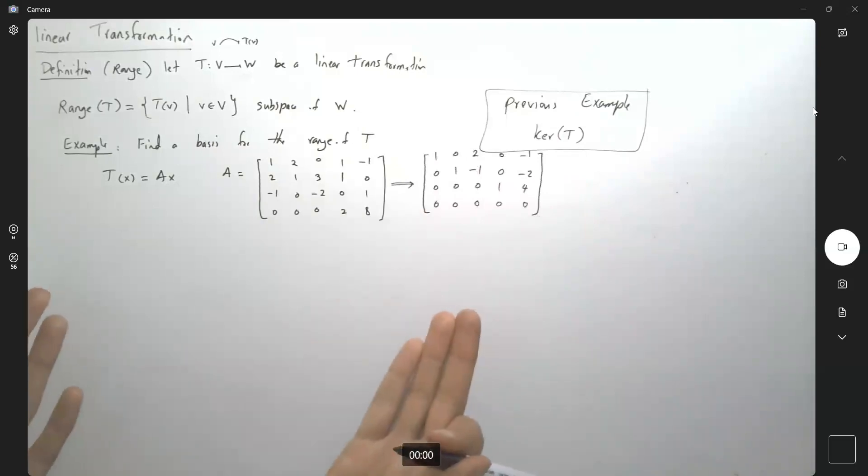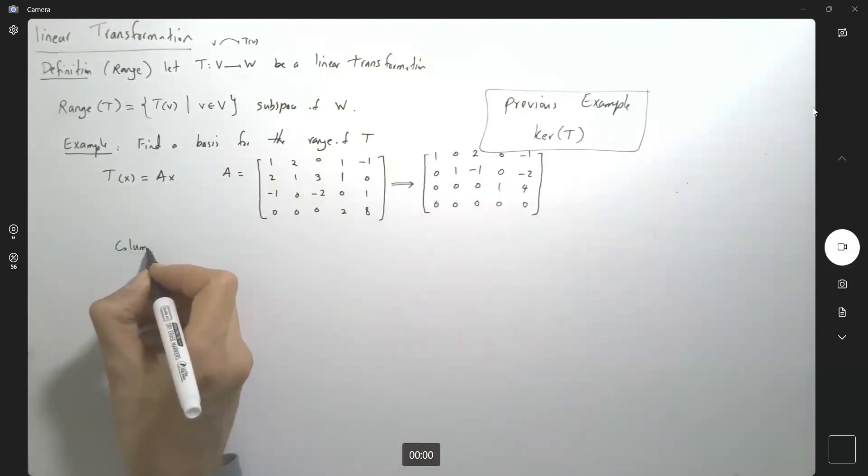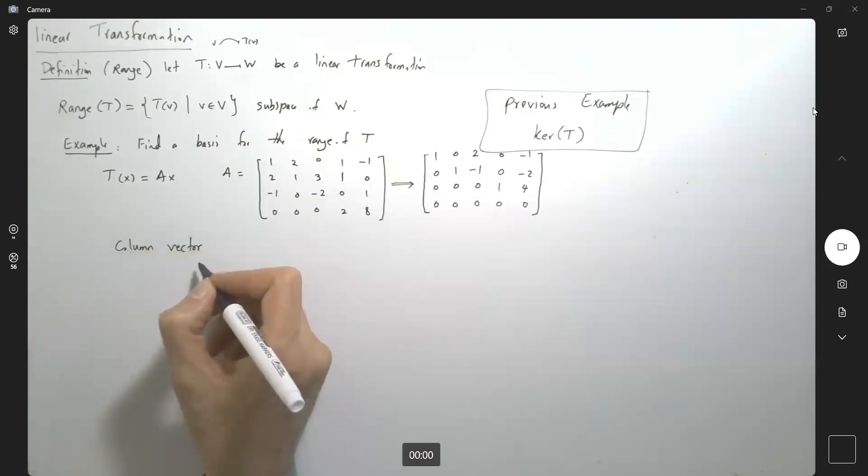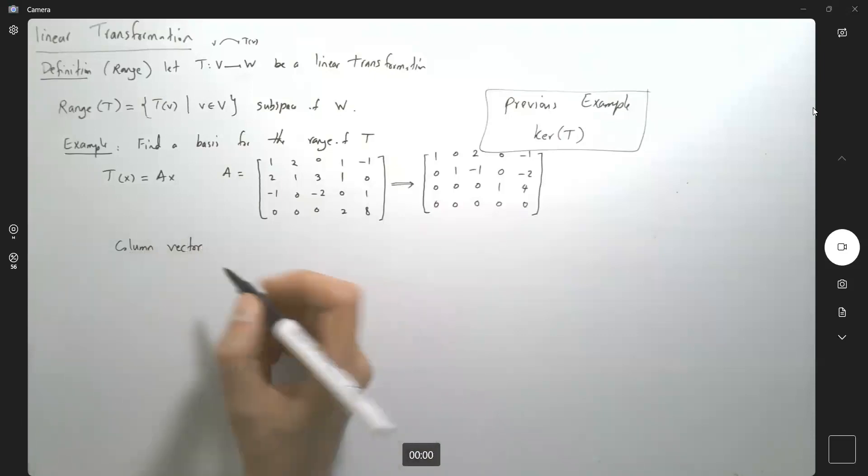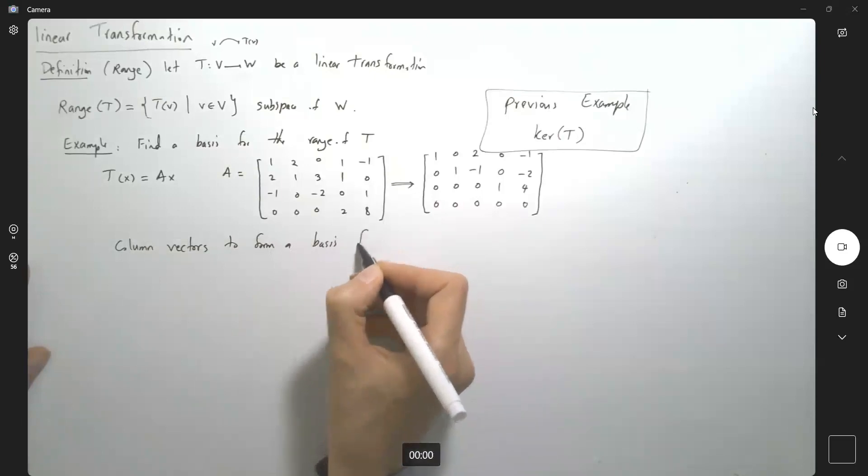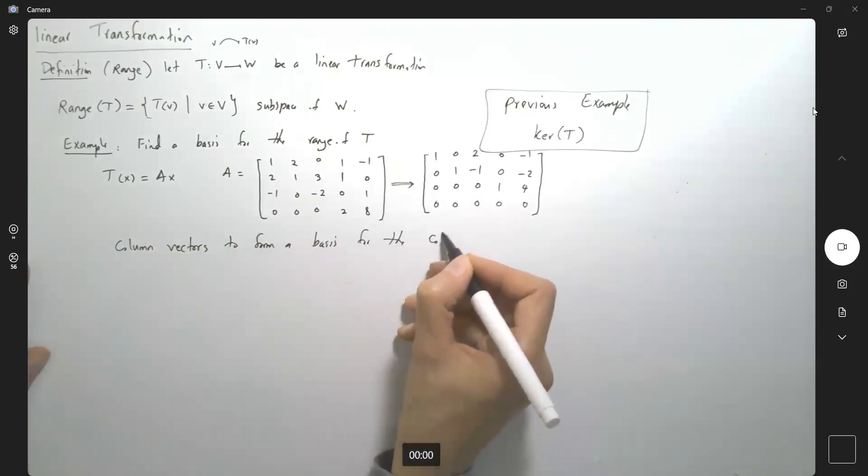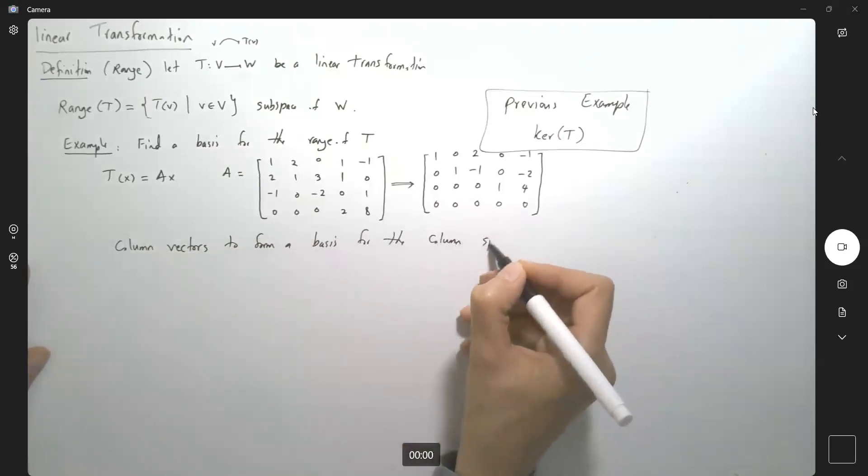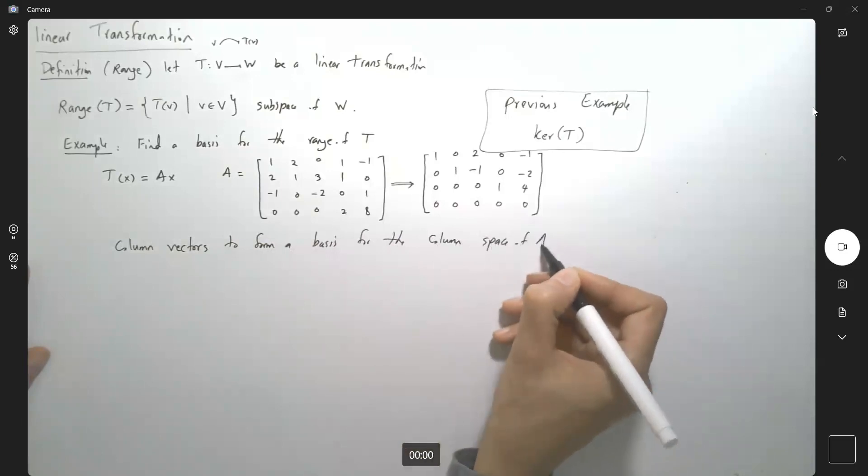So what I'm basically doing, we are finding the column vectors to form a basis for the column space of A.